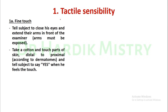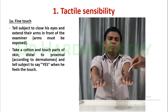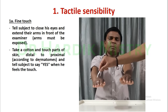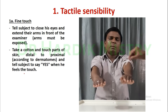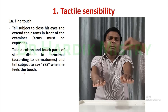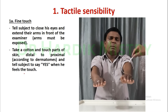So first we begin with tactile sensibility — fine touch. Tell the subject to close his eyes and extend their arm in front of the examiner. Arms must be exposed, meaning no clothing over the arms. Take a cotton and touch parts of the skin, starting from the distal to the proximal part of the limb according to dermatomes. Tell the subject to say yes when he feels the touch.